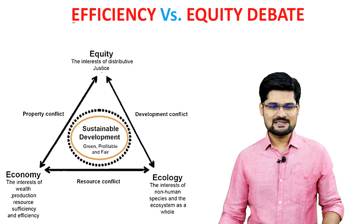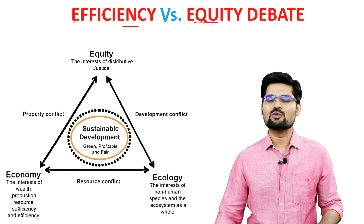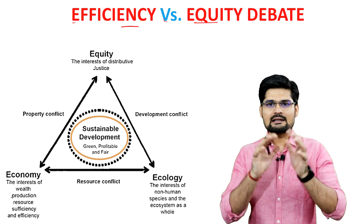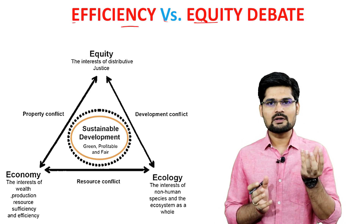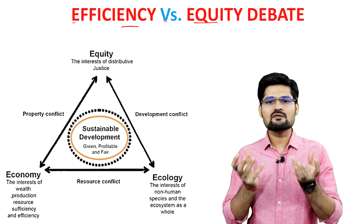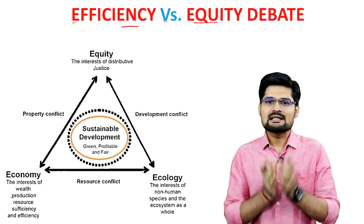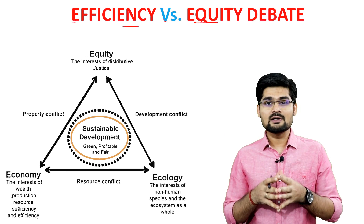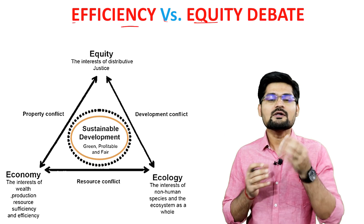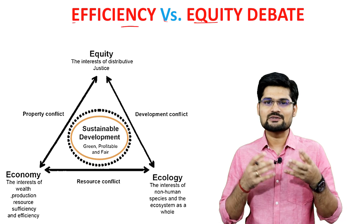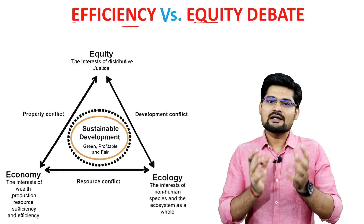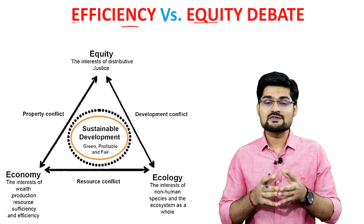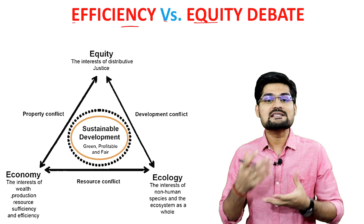Let's discuss the concept of efficiency versus equity debate. What is efficiency in simple terms? Efficiency is when in a system the ratio of input to output is greater — the efficiency of the system is greater. In an economy, when productivity is greater with minimal factors of production — land, labor, technology and inputs — then it is an efficient economy. It's about allocation of resources and how much resources we generate.